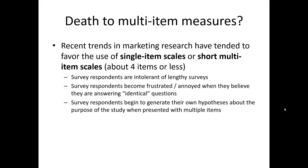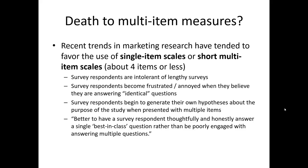If a survey respondent sees multiple items that all look similar to one another, they may begin to generate their own hypotheses about what the purpose of the study is — and that's not healthy for your research. You don't want your respondents trying to guess what the actual study is about, because if they do, they may alter their responses to fit those expectations. This current trend of reducing multi-item measures could be summarized as: it's better to have a survey respondent thoughtfully and honestly answer a single best-in-class question rather than be poorly engaged with answering multiple questions.